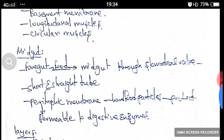The midgut is also called mesentron or proventriculus. Food enters from the foregut to the midgut through the stomodial valve. The midgut is a short and straight tube. The midgut consists of a peritrophic membrane, which protects the gut from hard food particles. This peritrophic membrane is permeable to digestive enzymes.